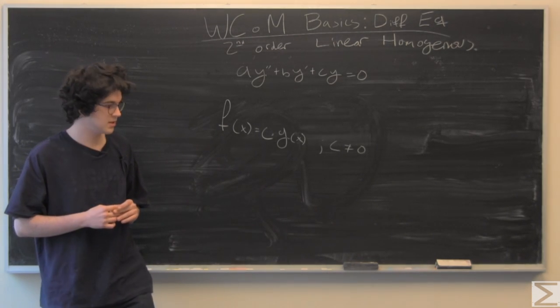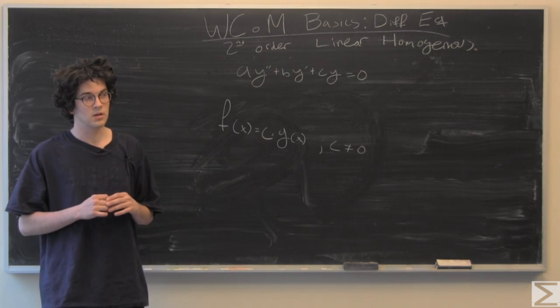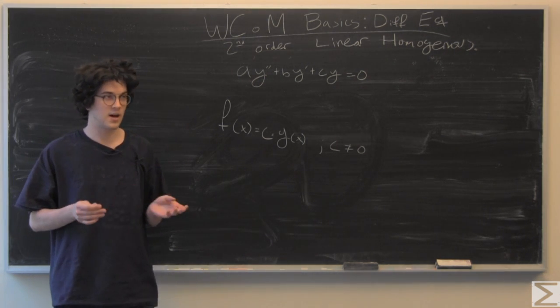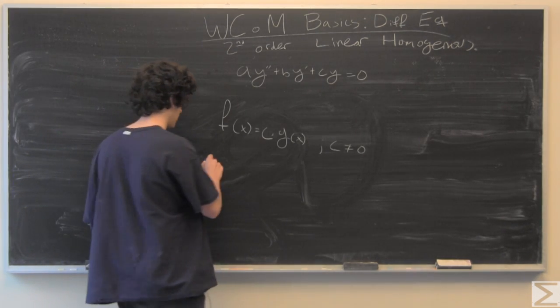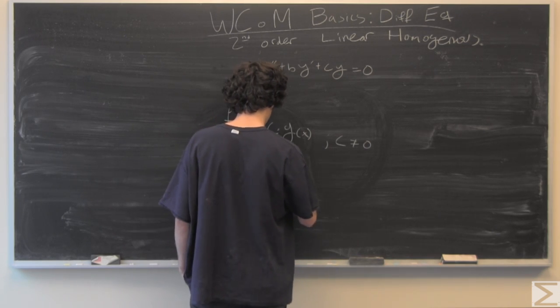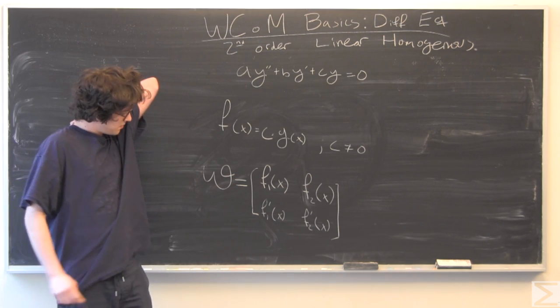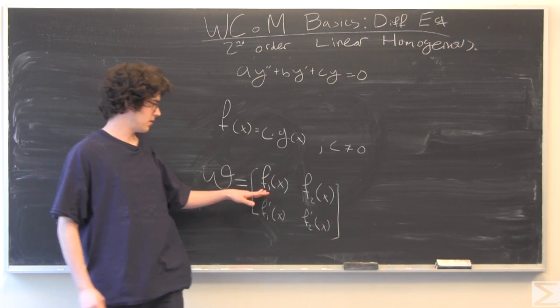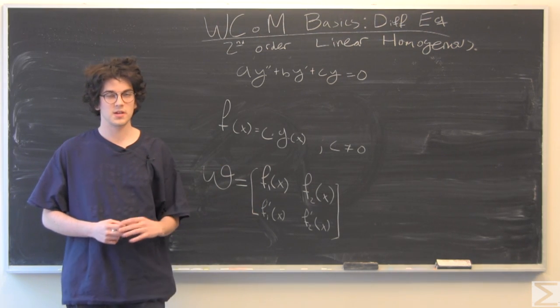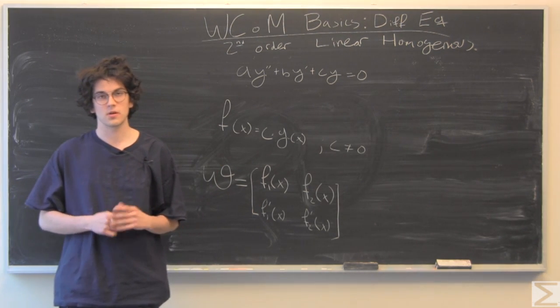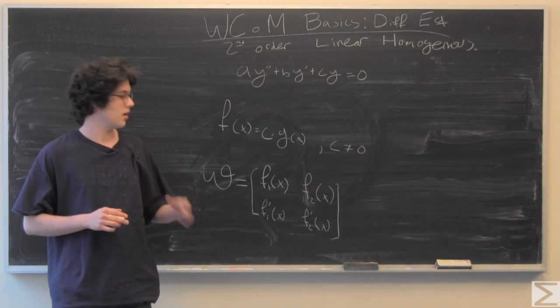The Wronskian is a square matrix and we're going to take the determinant of the Wronskian. For our cases, it's just going to have two functions in it. Our first row contains our functions F1 and F2, and our second row contains the derivatives of these functions.